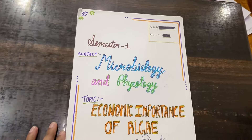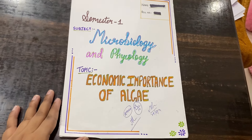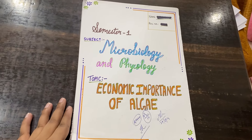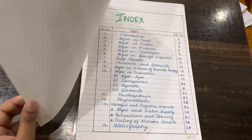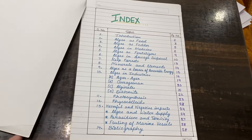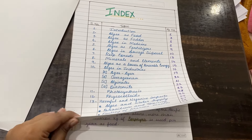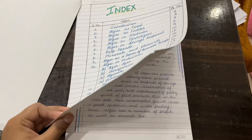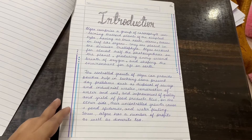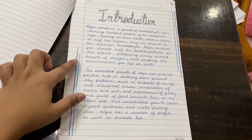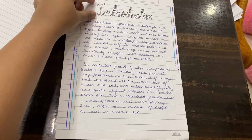So guys, this is the first sample assignment. The front page has been decorated in a very simple way — topic, semester, name, roll number, etc. Then comes the index, where you have to add all topics with their page numbers. You can see the headline is very prominent.